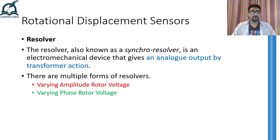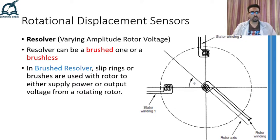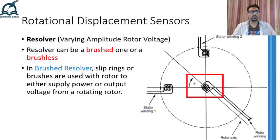The next rotational displacement sensor, called a resolver, also utilizes the working principle of a transformer — similar to the rotational differential transformer but in a different way. Resolvers are also known as synchro resolvers and they produce analog output by utilizing transformer action. There are two different forms, so let us discuss both. The first form is known as varying amplitude rotor voltage. The rotating body is attached directly to the rotor, and as the body rotates, the rotor rotates accordingly.